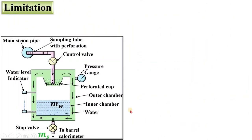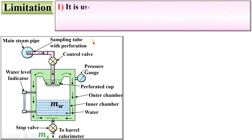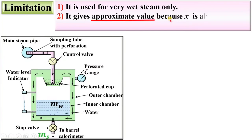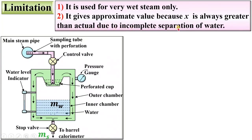The limitation of the separating calorimeter: it is used for very wet steam only. It gives an approximate value because x measured is always greater than the actual value, due to incomplete separation of water in the perforated cup — some water particles can move along with the steam particles.